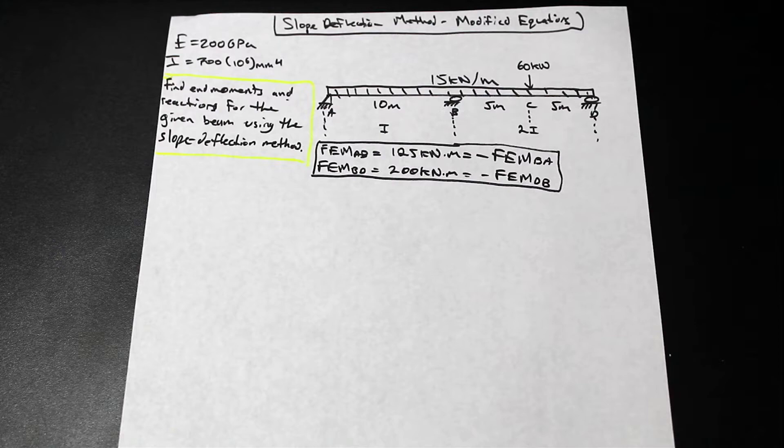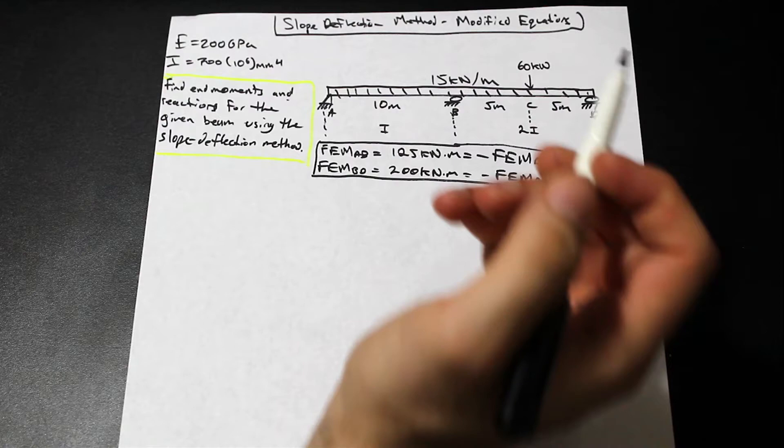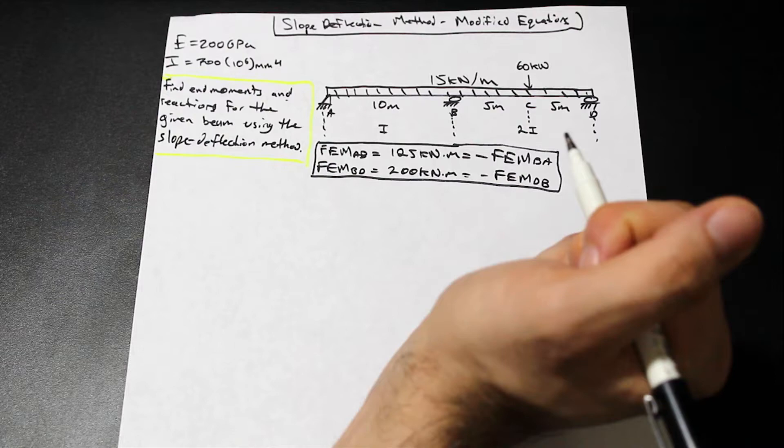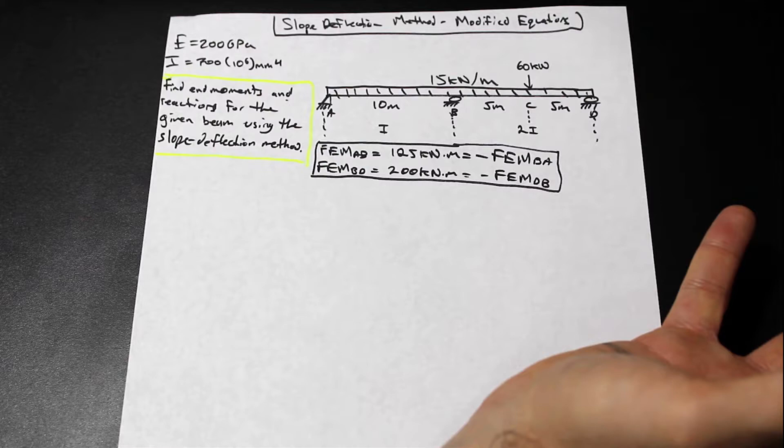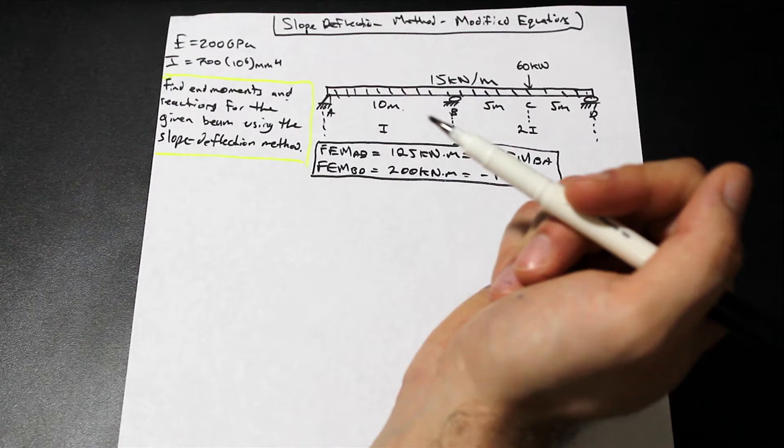These modified equations can be applied when we have a continuous beam and the ends of the beam are rollers or hinges that are allowed to rotate. When they're allowed to rotate, we can take advantage of the fact that we know the moment on a hinged or roller end of the beam is equal to zero. I'm going to go over the derivation quickly, and then we're going to solve this beam for the end moments and reactions using the slope deflection method.